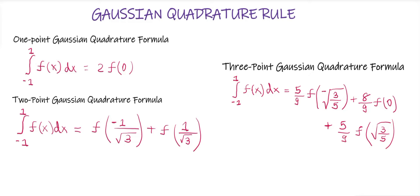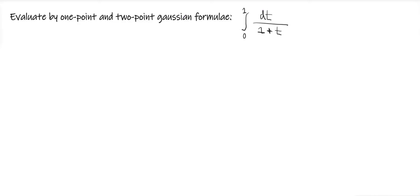One thing you would have observed is that the integration is from minus one to one. So whenever we are solving examples based on the Gaussian quadrature rule, it is necessary that the integration should be from minus one to one. So now let's solve this example.